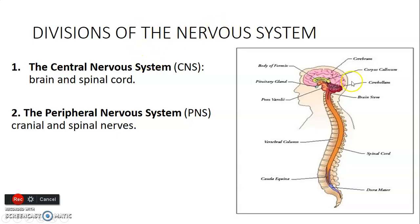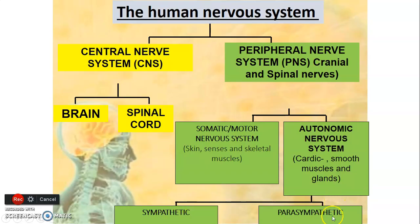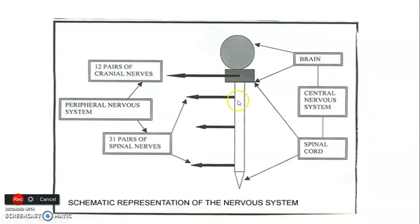Generally, the nervous system is divided into two: the central nervous system, made up of the brain and spinal cord, and the peripheral nervous system, made up of nerves that exit the brain — the cranial nerves — and nerves that exit the spine — the spinal nerves. The peripheral nervous system is divided into somatic and autonomic. Somatic goes to the skin and skeletal muscle, while autonomic mainly controls cardiac and smooth muscles as well as glands, and is divided into sympathetic and parasympathetic. Somatic is voluntary; the autonomic nervous system is involuntary. The peripheral nervous system has 12 pairs of cranial nerves and 31 pairs of spinal nerves.